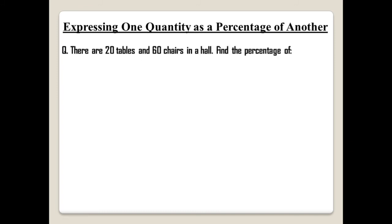Now expressing one quantity as a percentage of another means we have to use the second formula. Read the question first: there are 20 tables and 60 chairs in a hall. Find the percentage of the tables and the chairs in the hall — meaning we have to find what percentage of the total are tables, and what percentage are chairs.